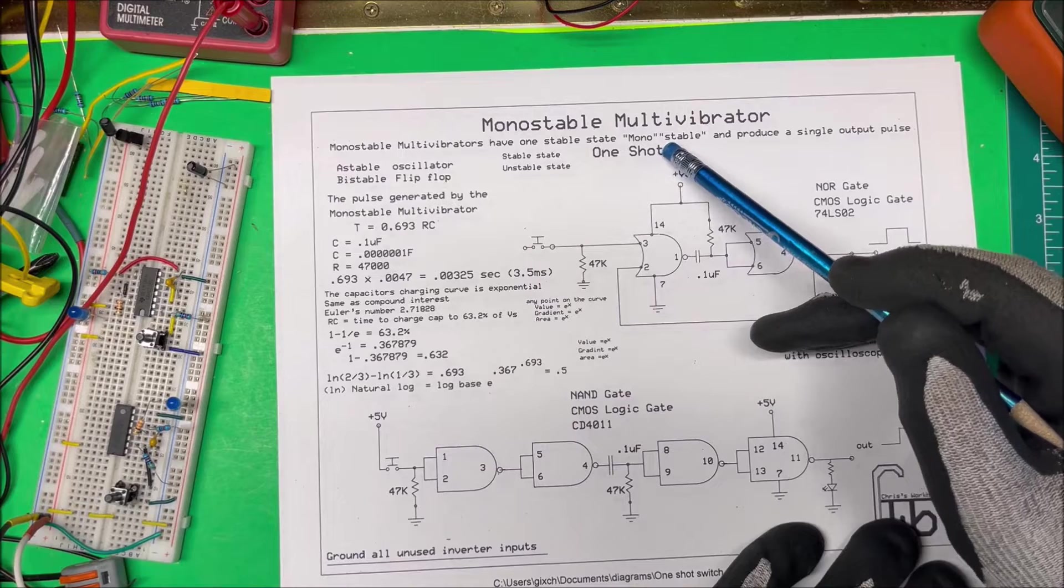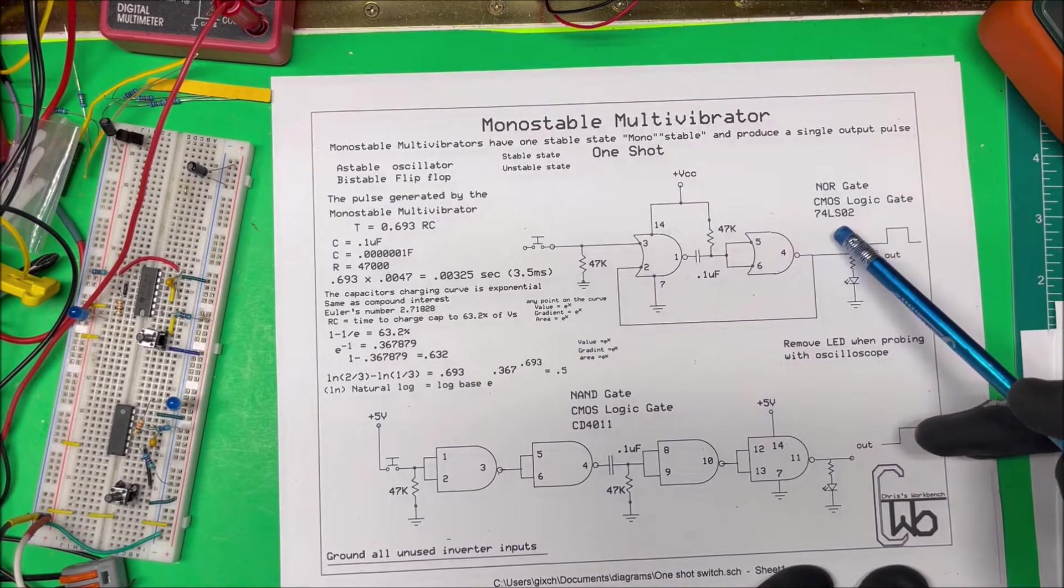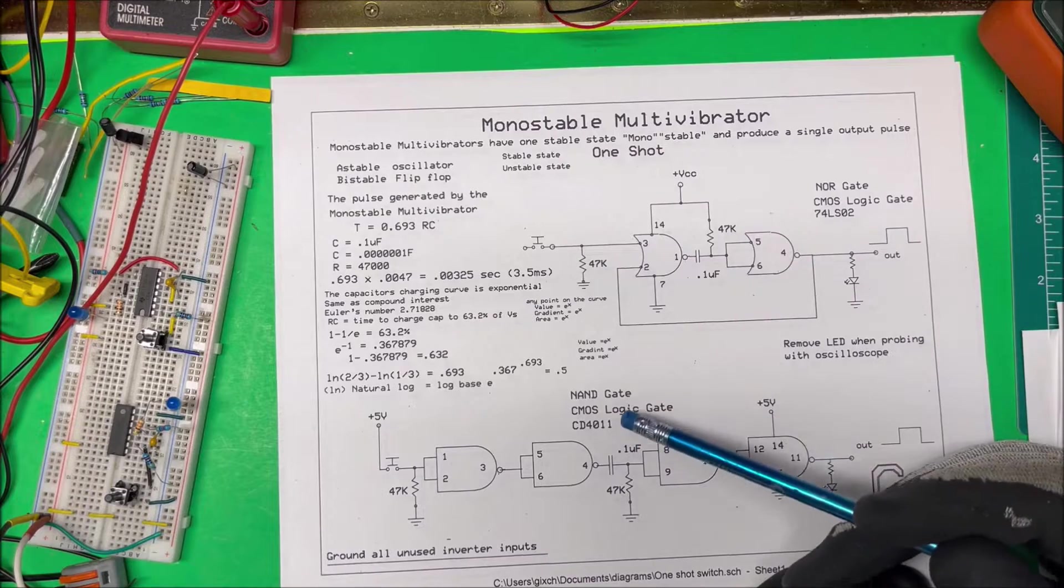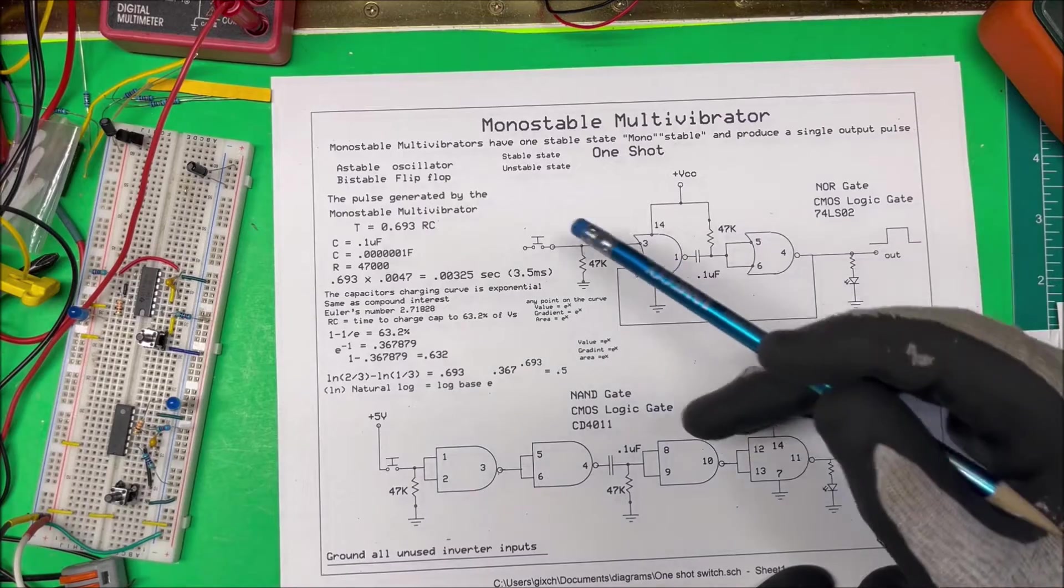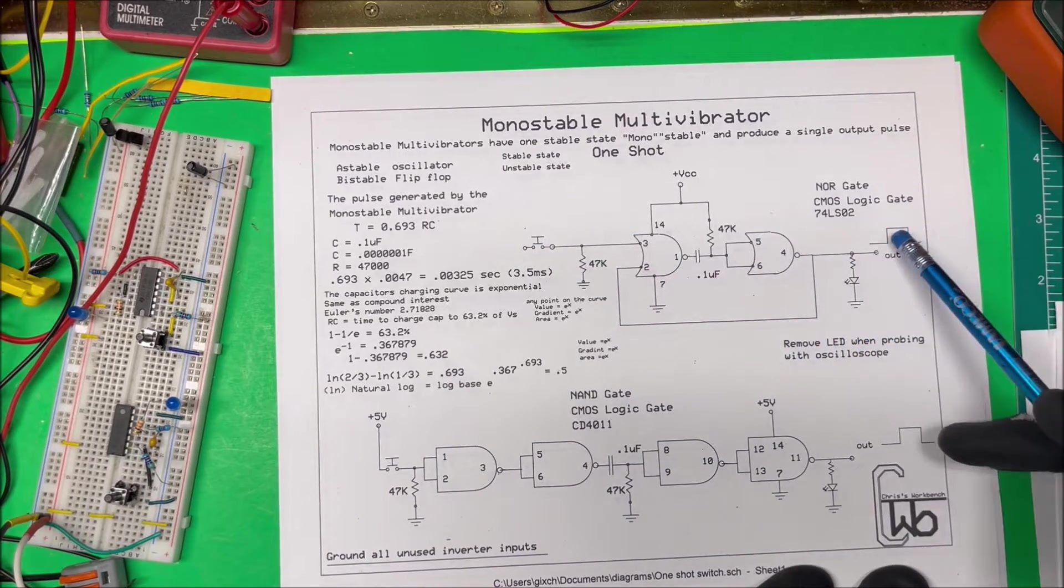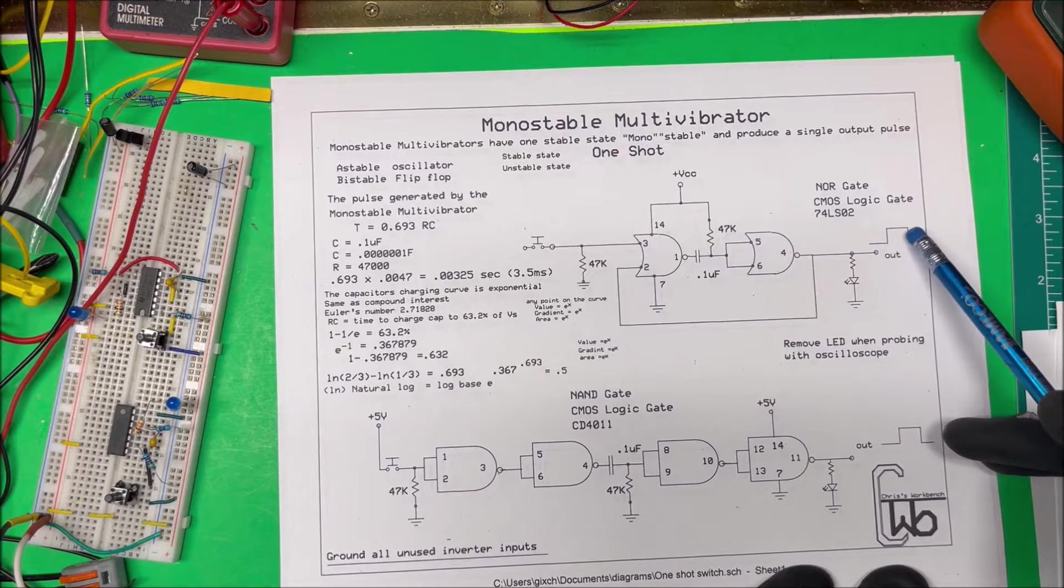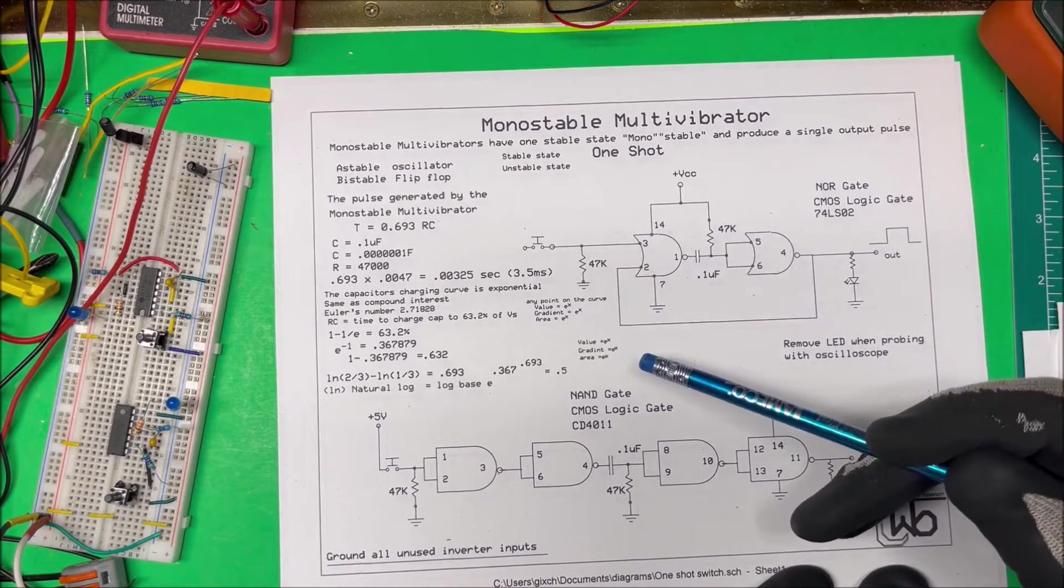We'll take a look at a couple one-shots here. I made up two of them: one with an OR gate, a 74LS02, and one with a NAND gate, a CD4011. When you depress this button here, it puts out one single pulse, and the time is dependent on this RC time constant over here.